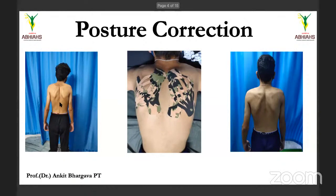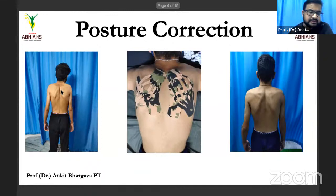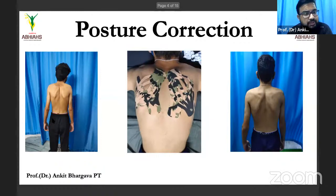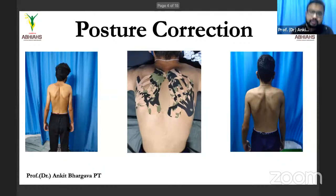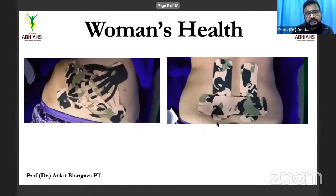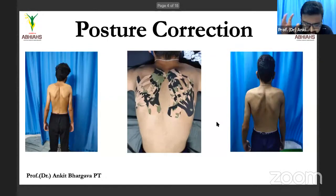We taped the neck muscles and thoracic muscles. I also released the hamstrings and quadriceps equally, because if you don't release one group of muscles it will create problems later. This is how we do posture correction — it's an extreme case. Does anyone have questions related to this posture?